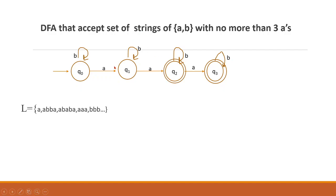I accept this as an acceptance state, which means: Q0 accepts zero a's, Q1 accepts one a, Q2 accepts two a's. When we read B, we stay in the first state. Then reading a single A, we move to the second state.